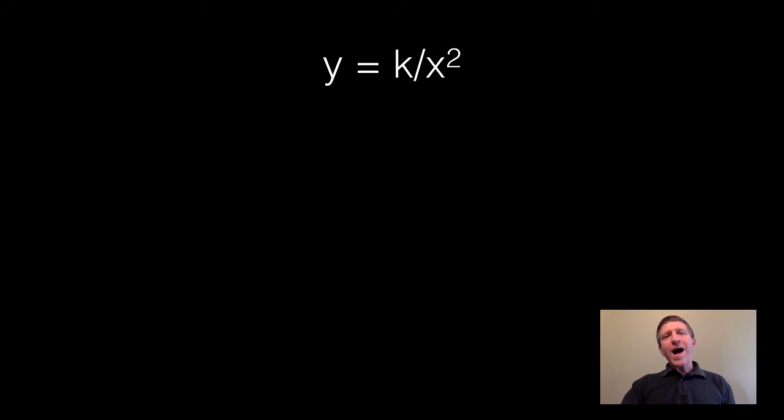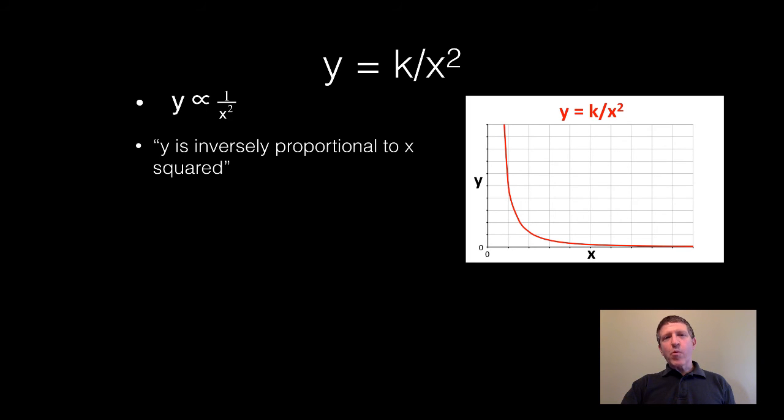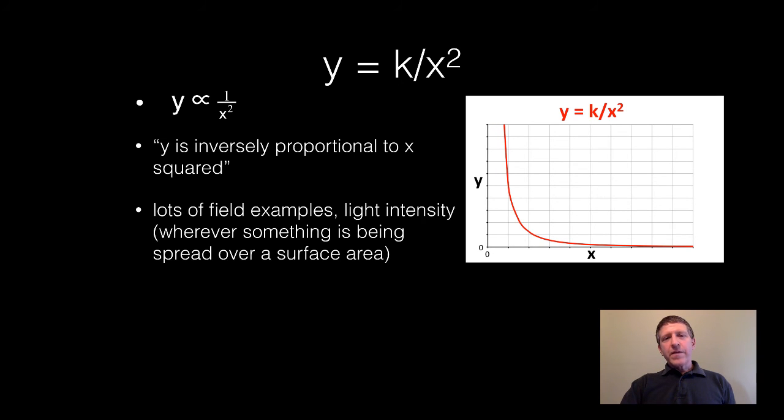Another common relationship, y equals k over x squared. You can say y is inversely proportional to x squared or you could say y is directly proportional to 1 over x squared. There are a lot of examples in this especially in fields and light intensity. Whenever you have something that's being spread out over a surface area like light that's spread out over a sphere for example.